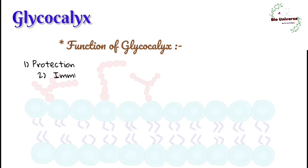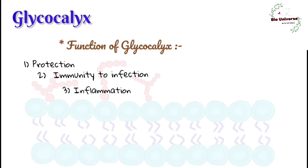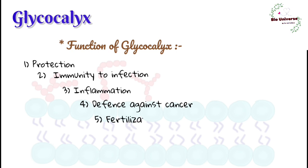Functions of glycocalyx: one, it cushions the plasma membrane and protects it from chemical change. Two, it facilitates the immune system to identify and selectively attack outside organisms. Three, in blood vessels, the binding of leukocytes in healthy states is prevented by the glycocalyx coating. Four, in cancer cells, changes in the glycocalyx permit the immune system to identify and neutralize them.